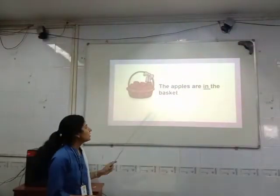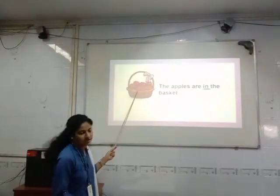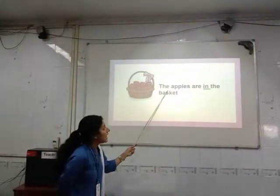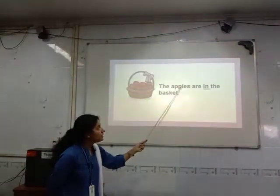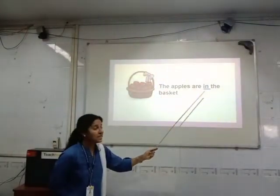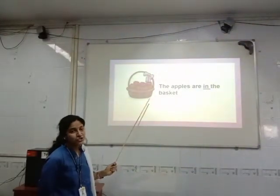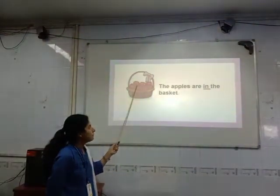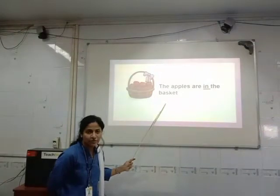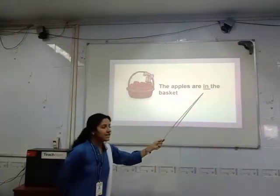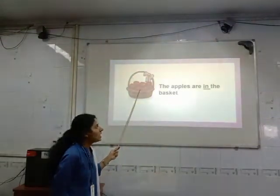Now see the next example. What have you seen in this picture? There is a basket and apples. Now read this sentence: The apples are in the basket. Where are the apples? The apples are in the basket. So the word 'in', which is underlined, shows us exactly the position of the apples.